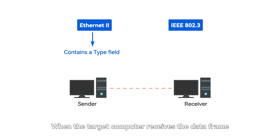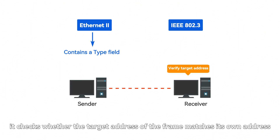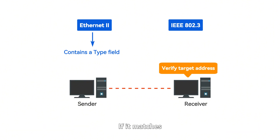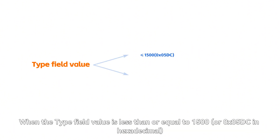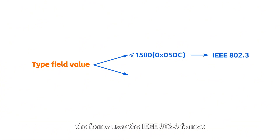When the target computer receives the data frame, it checks whether the target address of the frame matches its own address. If it matches, it receives the data frame and decapsulates it to extract the data content. When the type field value is less than or equal to 1500 (0x05DC in hexadecimal), the frame uses the IEEE 802.3 format.